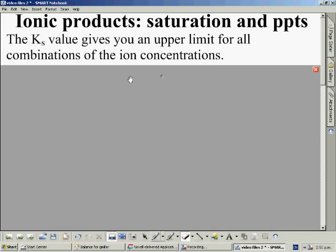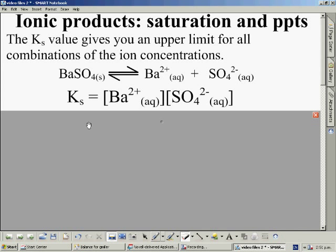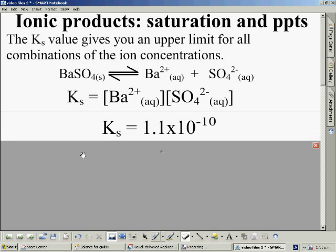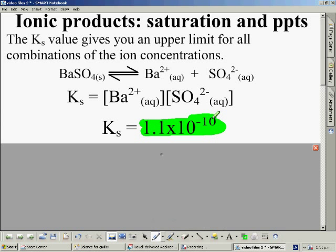If we have a solubility reaction, it's an equilibrium reaction. It has a KS expression and the KS value. There it is for this example. It's quite a low number. What this means is that this solubility reaction will reach equilibrium when the ion concentrations are quite low.